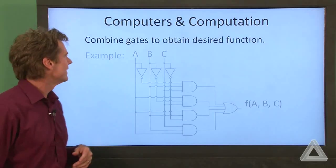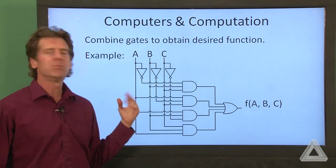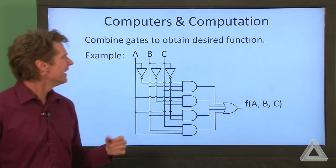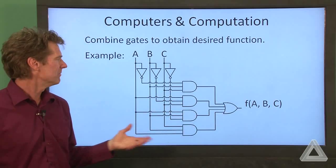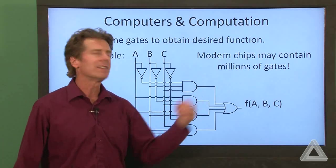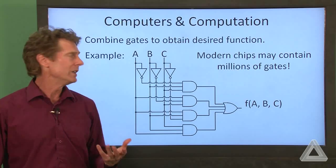And here's an example where we have three bits of input. They're fed into some NOT functions, into AND gates, an OR gate. And we don't really care what this function is doing. But in the computer, we might have millions of these gates, and they'll perform the computation that we desire.